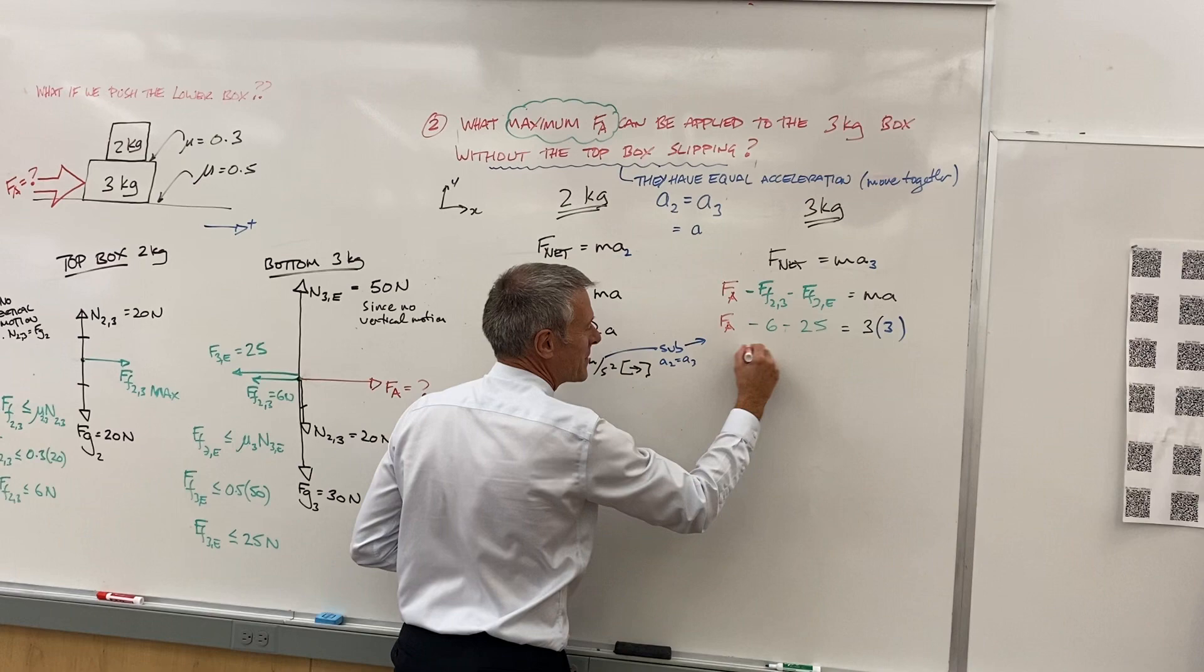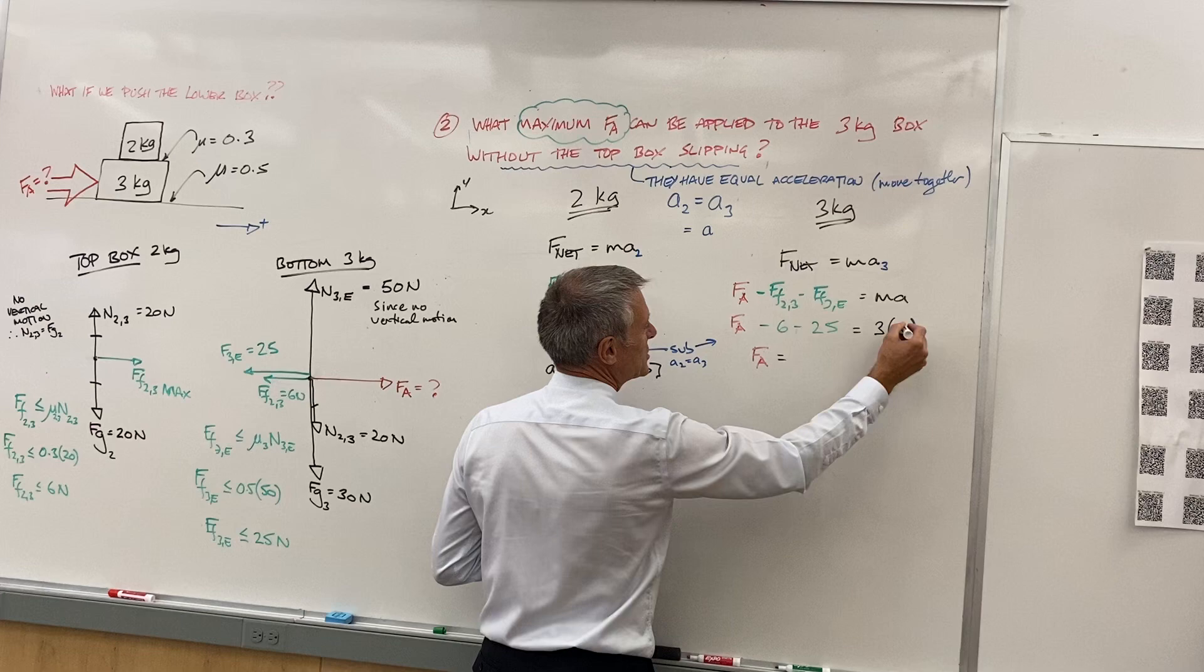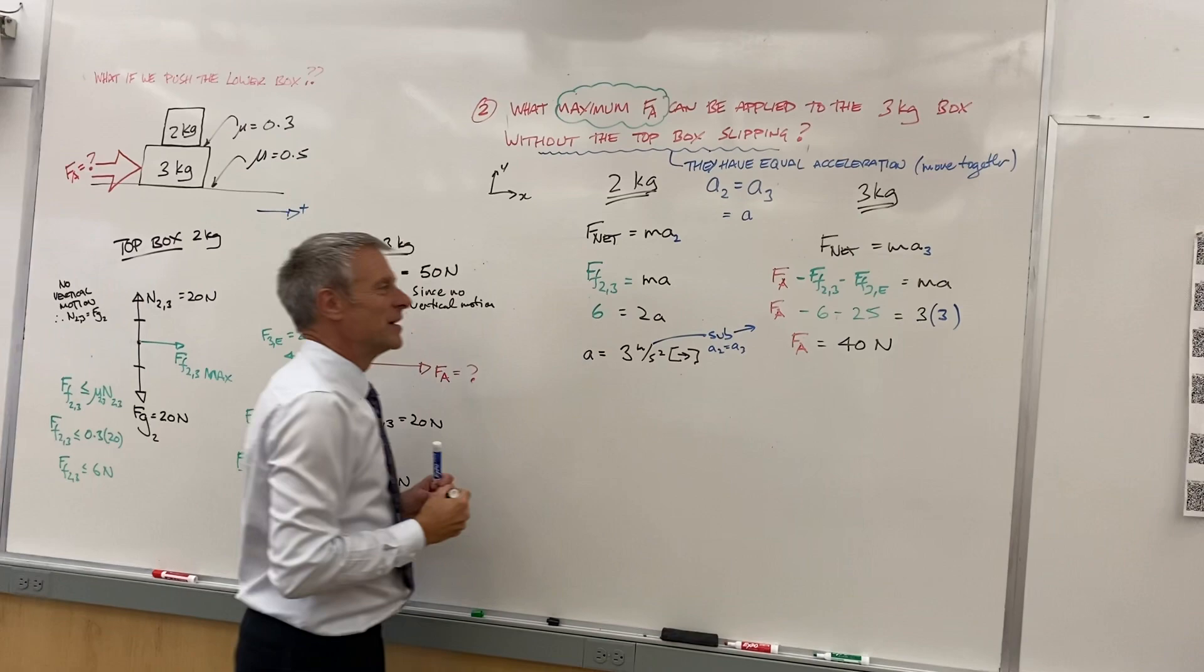FFa is equal to, well, it's just basic math, right? It's 9 plus 25 plus 6 is 40 newtons. So there we go.